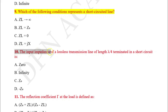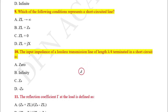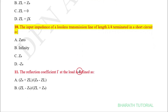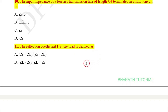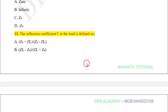Question number ten: The input impedance of a lossless transmission line of length lambda/4 terminated in a short circuit is? Question number eleven: The reflection coefficient at the load is defined as — this is the most important; these are all repeated questions.